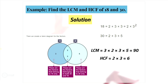Once we have the Venn diagram, finding the LCM is simply a matter of multiplying all the numbers in the Venn diagram together. So LCM equals 3 times 2 times 3 times 5, which equals 90. To find the HCF, we multiply the numbers in the overlapping section together. So the HCF of these numbers equals 6.